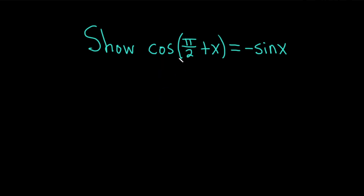Hi, in this video we're going to show that the cosine of pi over 2 plus x is equal to minus sine x. Let's go ahead and carefully go through this solution.